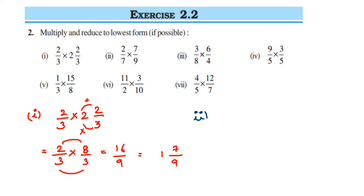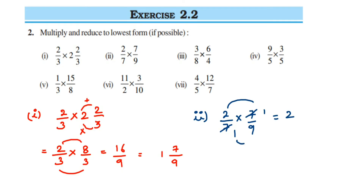Second question: 2/7 multiplied by 7/9. Here we can cancel numbers before multiplying to make it easier. 7 and 7 get cancelled, leaving us with 2 and 9. We cannot cancel those, so multiply: 2 × 1 = 2 and 1 × 9 = 9, so the answer is 2/9.